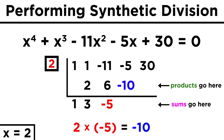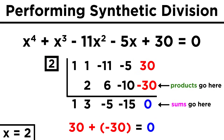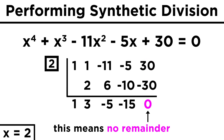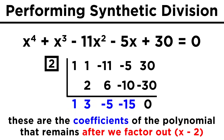Again, we multiply by two to get six. Adding to negative eleven, we get negative five. Then we multiply to get negative ten, add to get negative fifteen, multiply to get negative thirty, and finally we add to get zero. The fact that this is a zero right here means that there is no remainder from the division, which means that two is a solution, and therefore x minus two is indeed a factor of this polynomial. These resulting numbers tell us the coefficients of the polynomial that remains after dividing by x minus two.